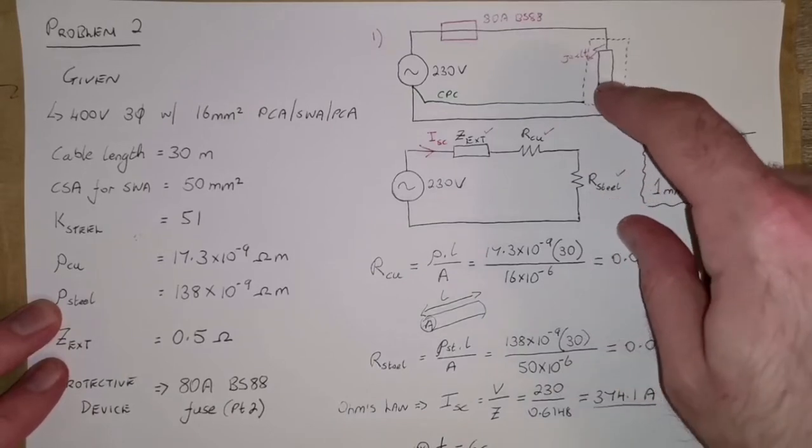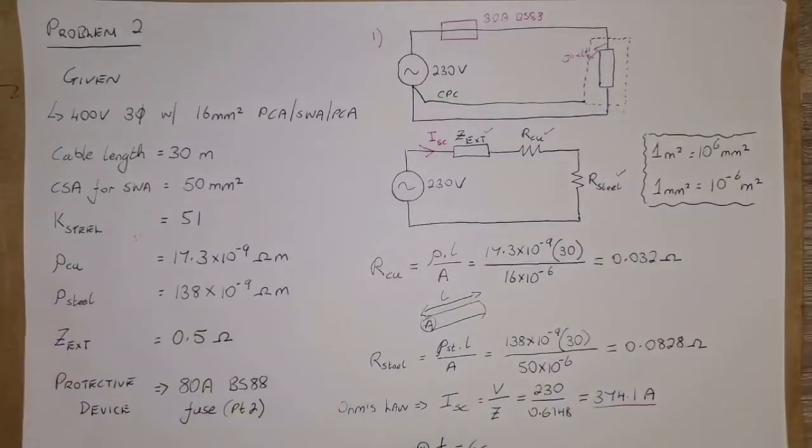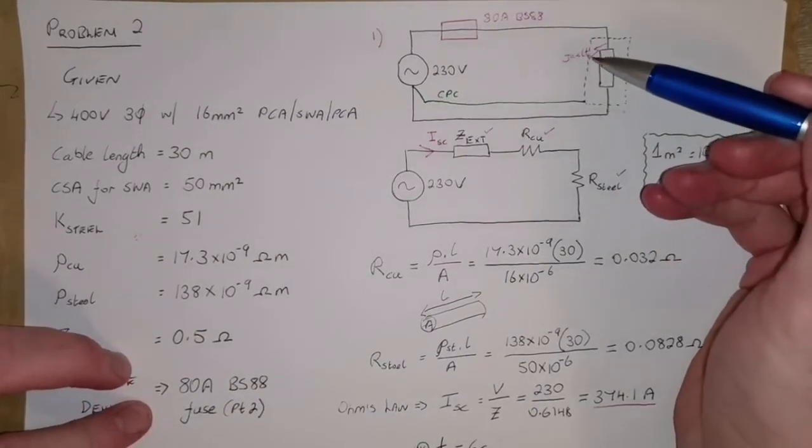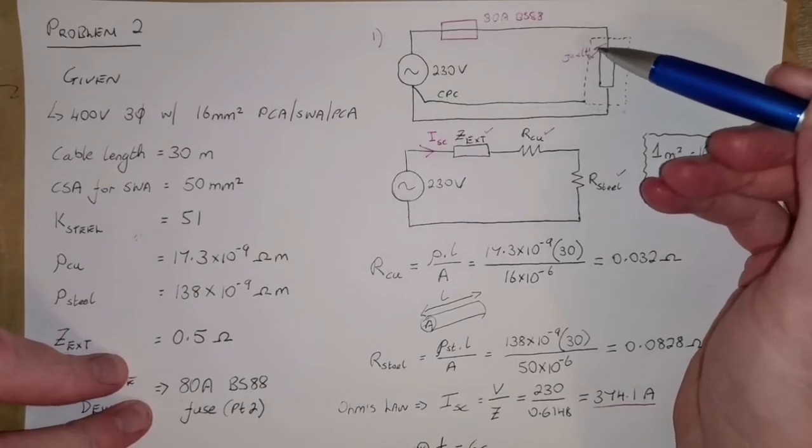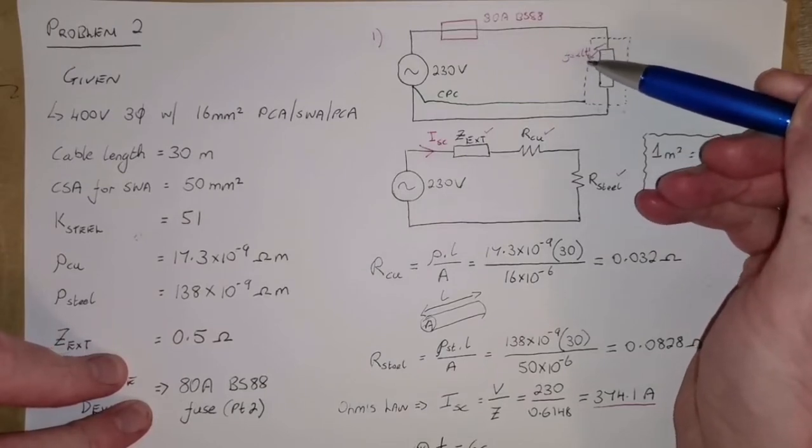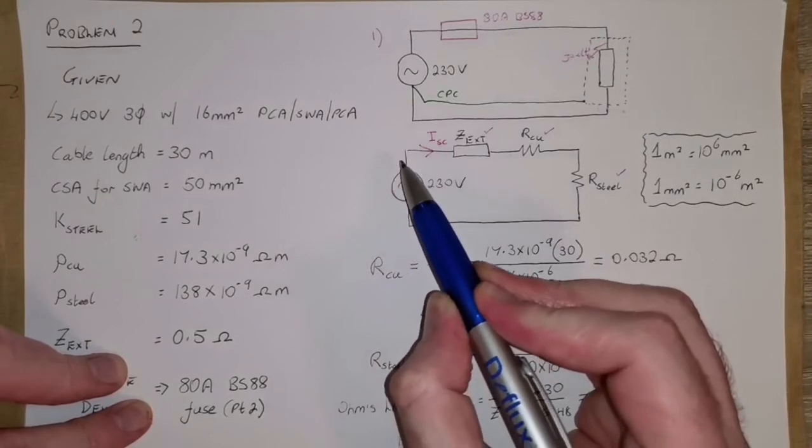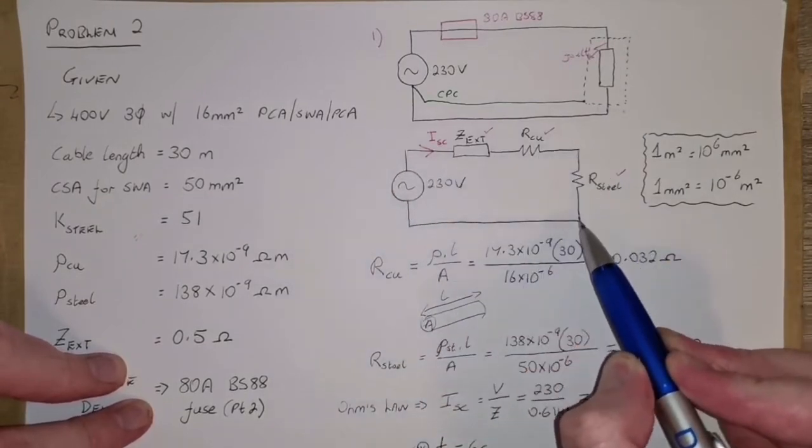But part two is really asking what will happen in terms of the voltage if the frame becomes live. In the fault we're looking at, that's what's happening here. The frame is becoming live, so in that scenario we do have a fault current flowing through this circuit.